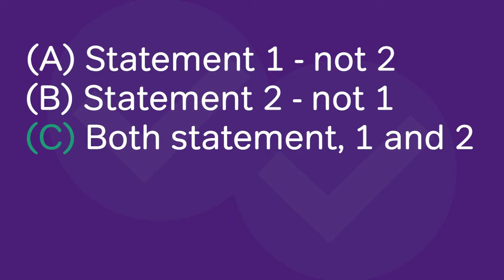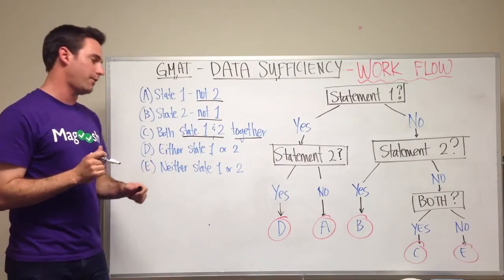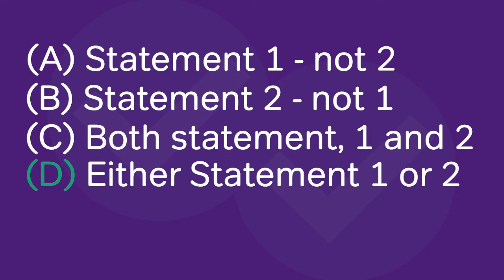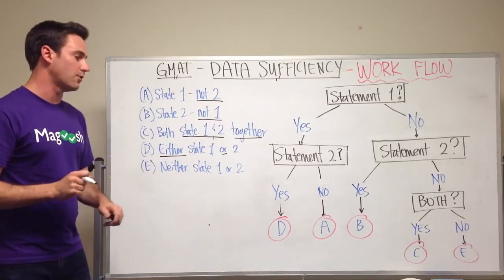Answer choice C is that both statement 1 and 2 together are sufficient. That means you must put them together in order to solve the problem. Answer choice D is either statement 1 or statement 2 will solve the problem, so you can use statement 1 by itself or use statement 2 by itself.